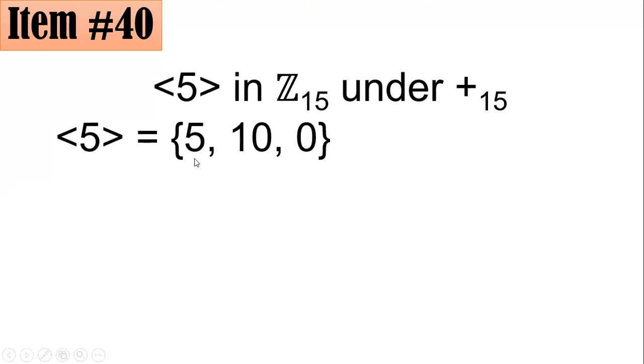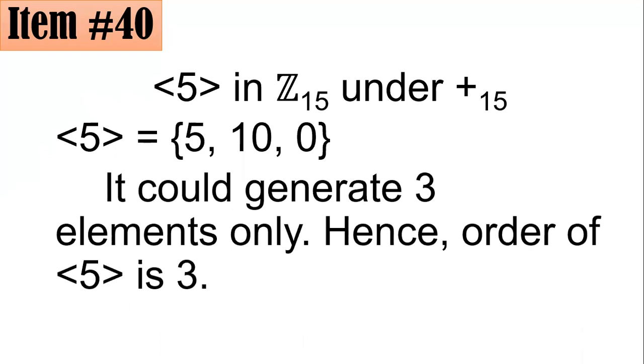0 plus 5 will be 5. So no matter how many times you repeat this process, you will only get 3 elements. It could generate only 3 elements. Hence, the order of the element 5 in Z₁₅ under addition modulo 15 is 3, letter A. I hope you got it as well. Thank you.